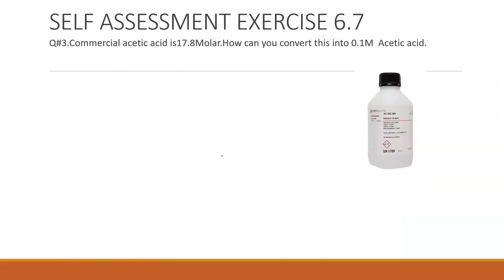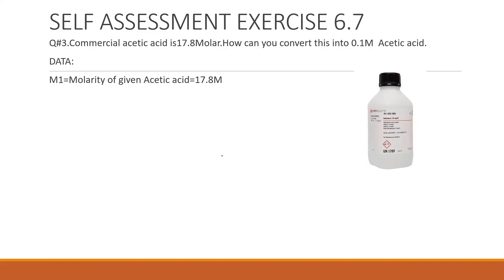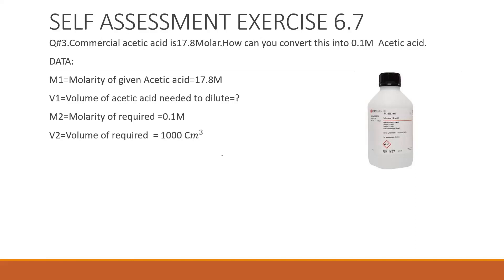Problem 3: Commercial acetic acid is 17.8 molar. How can you convert this into 0.1 molar acetic acid? Commercial acetic acid is the stock solution with high molarity. Since V2 is not given, we assume V2 = 1 dm³, and then we can find V1 using M1V1 = M2V2.